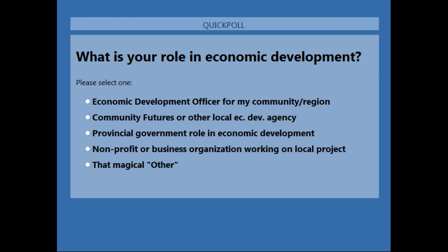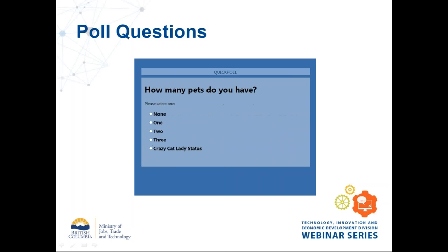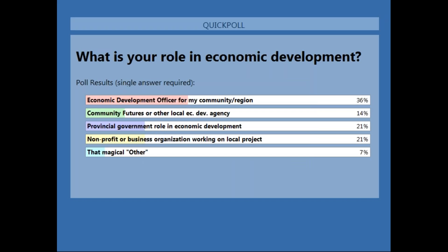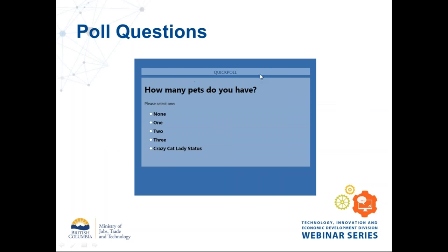We now have 88% voter turnout — I'll close the poll and share the results. About 36% are economic development officers in communities, 14% are with Community Futures or other local agencies, 21% are with the provincial government — hi colleagues — 21% with non-profit or other business organizations, and 7% are that magical 'other.' Thanks very much for sharing that, and we will carry on.